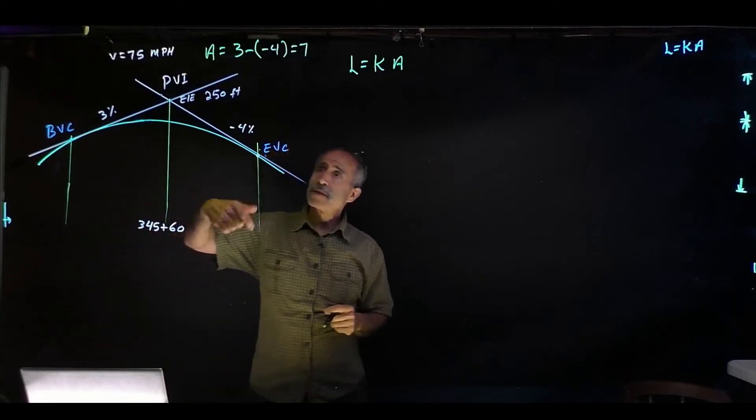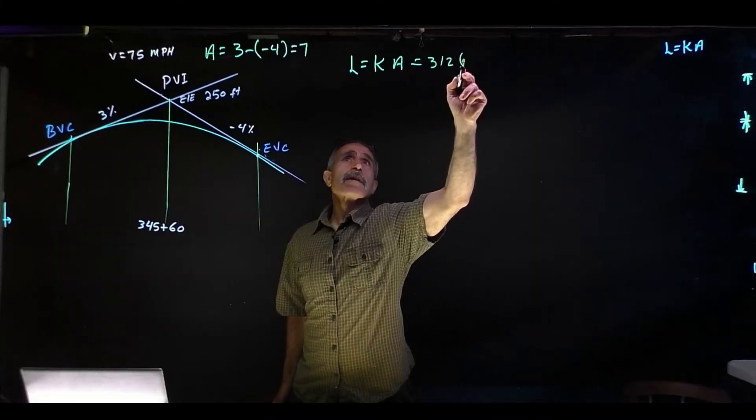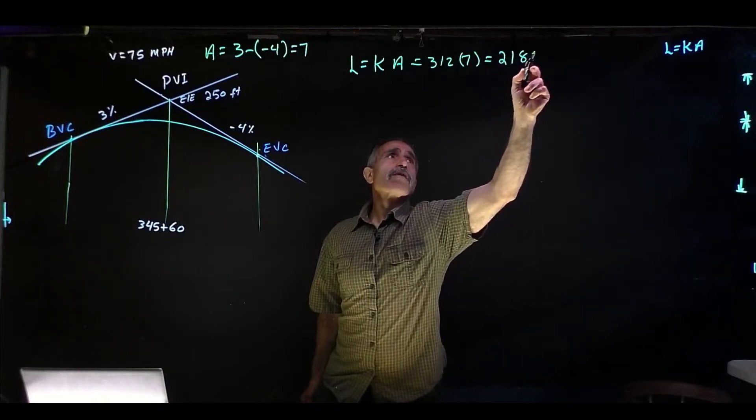That makes it 7. Grade up minus the combination of two numbers. And k from the table came out to be 312. Multiply that by 7, and we have 2184 feet.